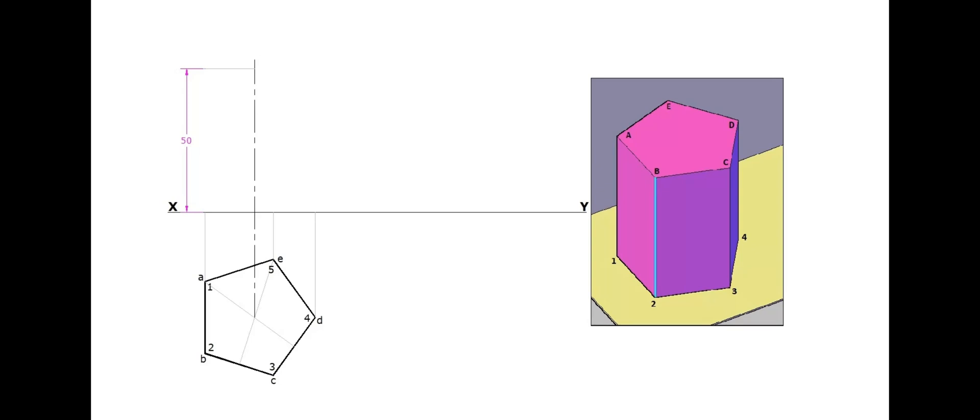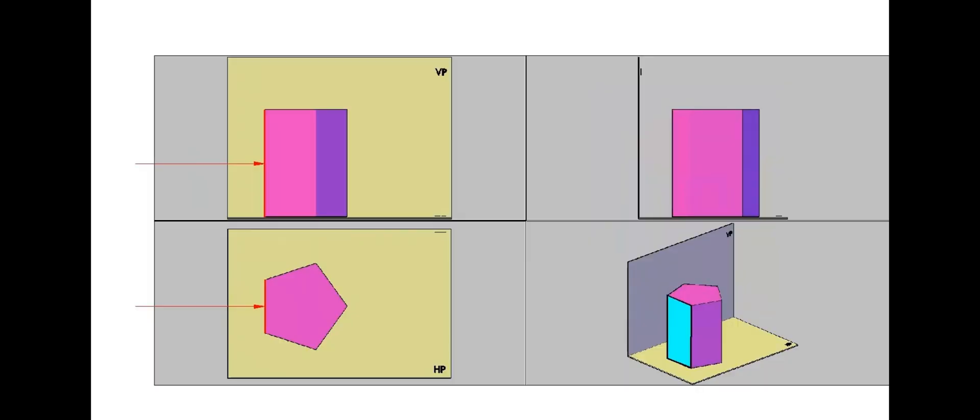The longer edges 2B, 3C and 4D are visible in the front view. Longer edge 1A will overlap with edge 2B. Edge 1A and 2B are part of a rectangular phase 1, 2, B, A, 1.